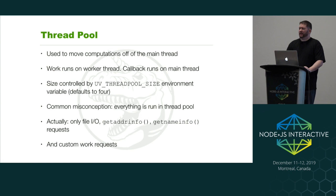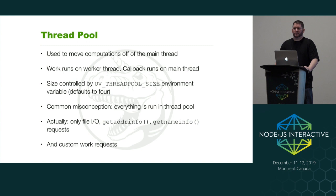By default there are four worker threads in the thread pool, but you can control that with an environment variable called UV_THREADPOOL_SIZE. If you start Node with UV_THREADPOOL_SIZE set to, say, 124, that's how many threads you'll spawn. Unless you actually need to do this, be careful — more threads are not always better. If you don't have enough hardware, threads can compete with one another, and all the context switching can actually slow your application down.